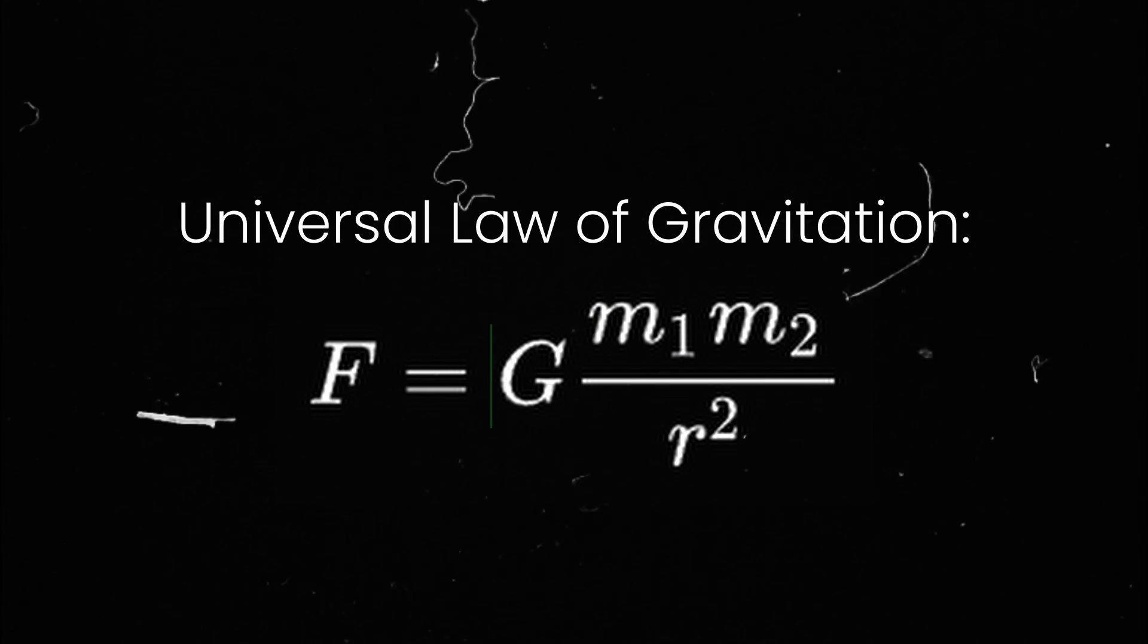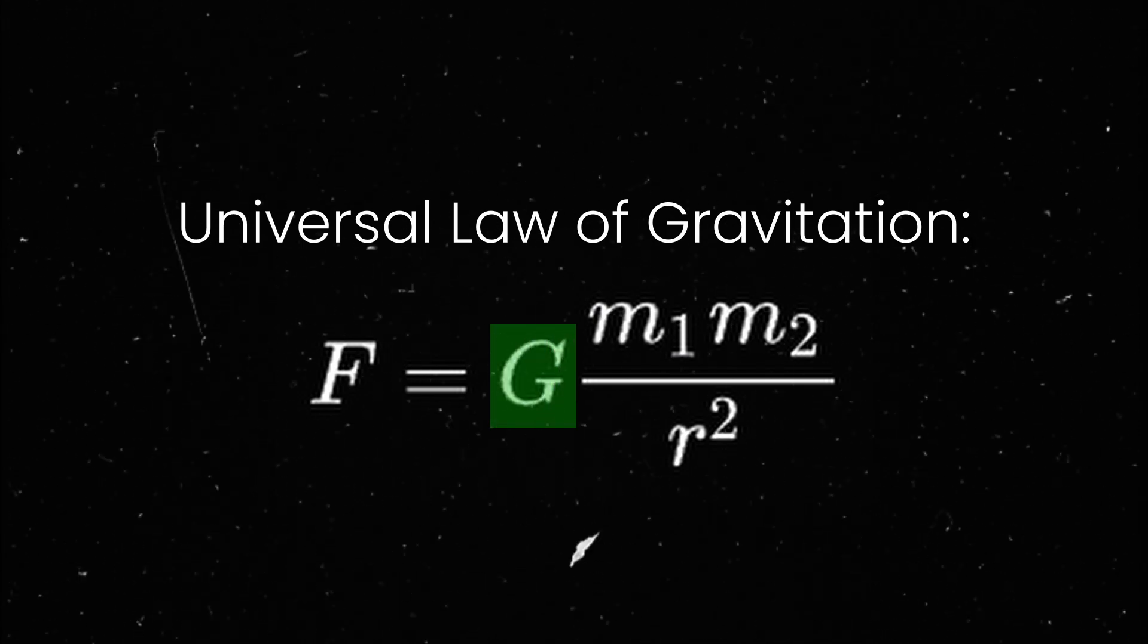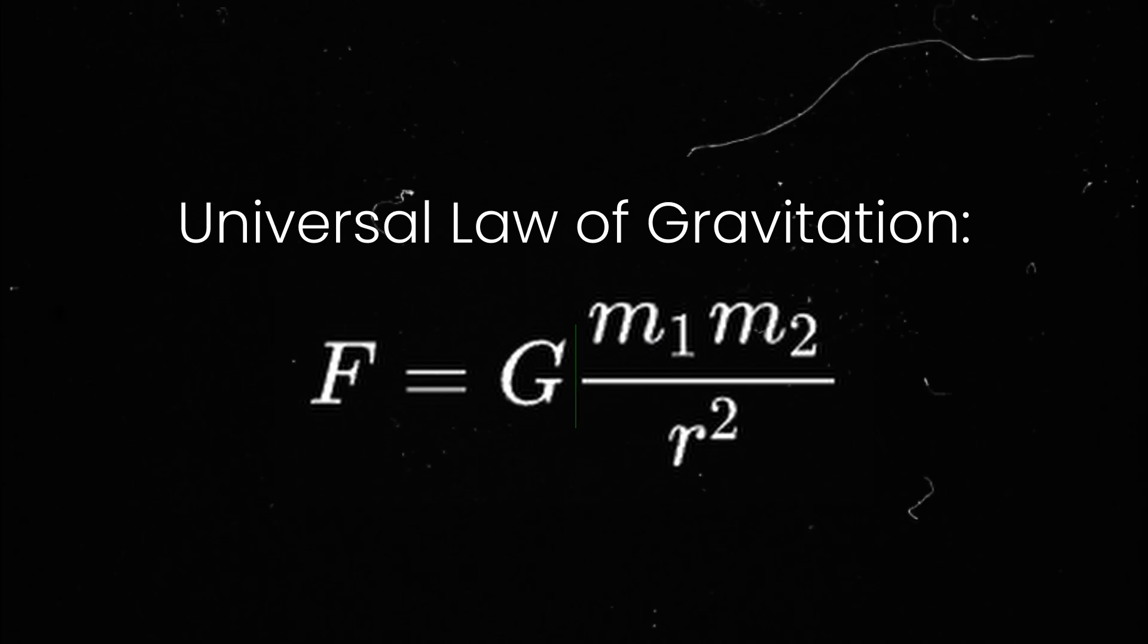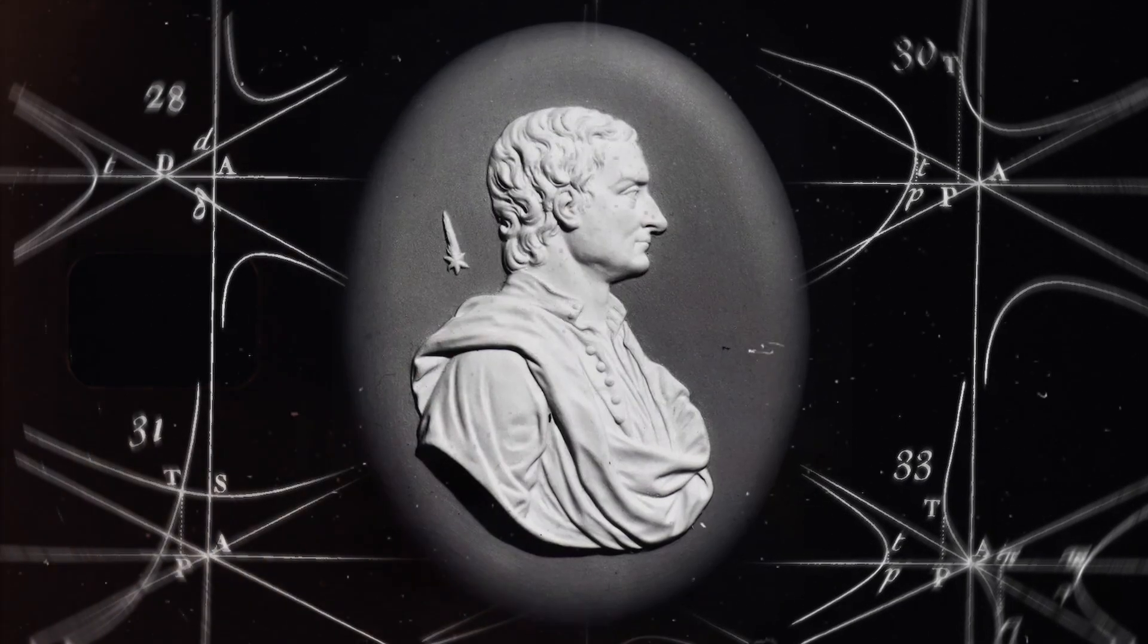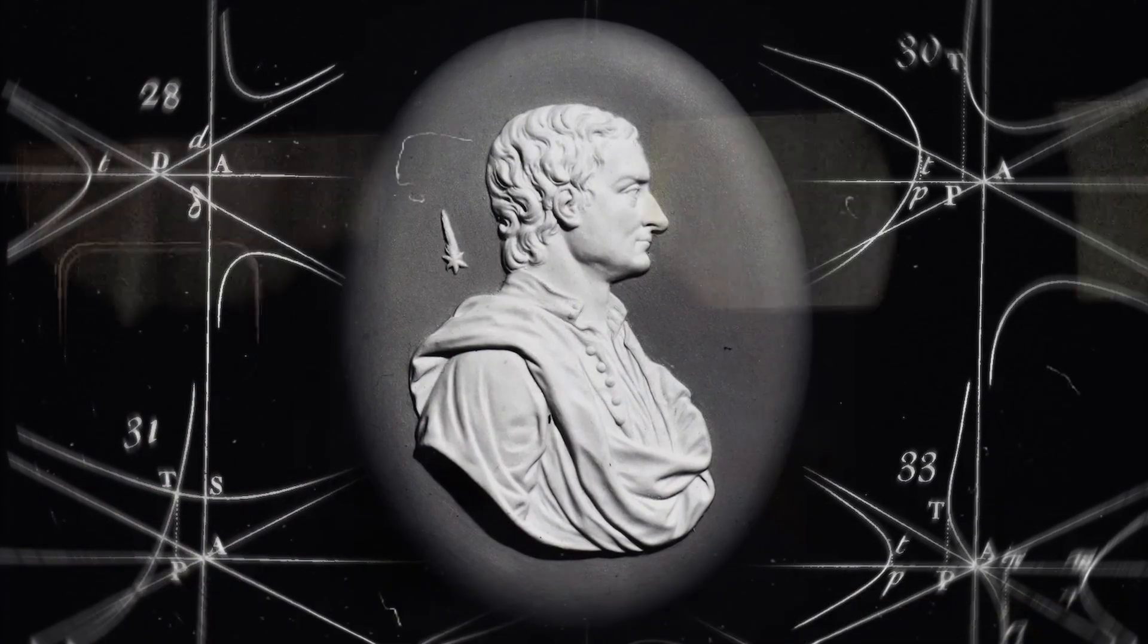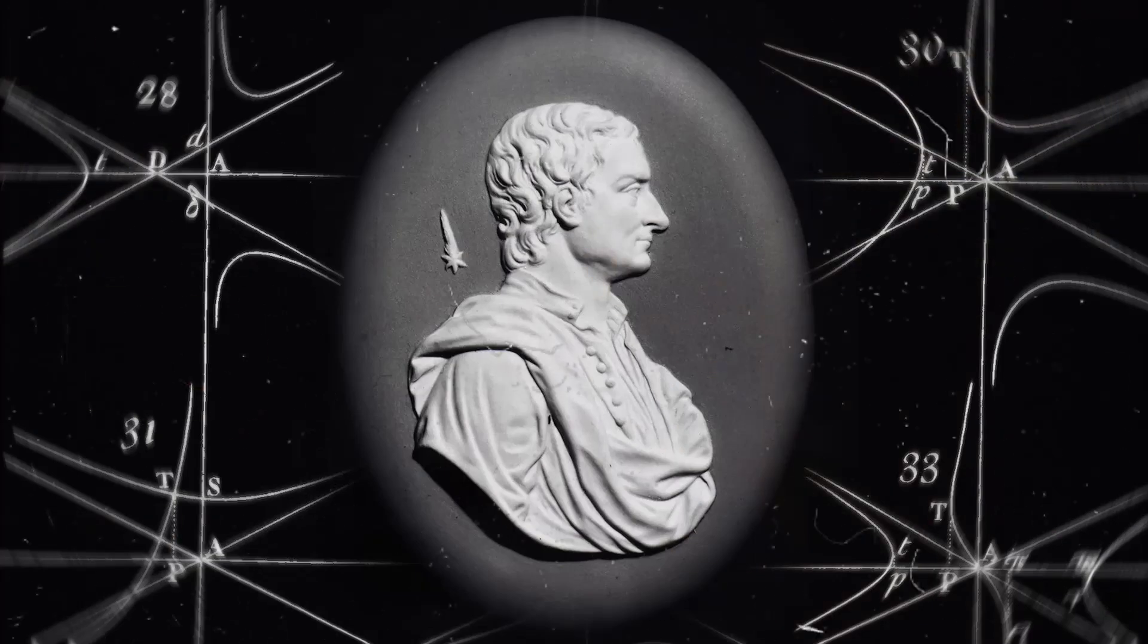So on the right side of the equation, there has to be a number, a universal constant, that makes this equation true. But by this point, Newton was focusing on other things, and he died in 1727 with that mystery unsolved. 51 years later, however, it was finally discovered. And the most interesting part about it is that it was almost completely by accident.